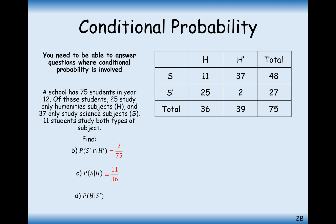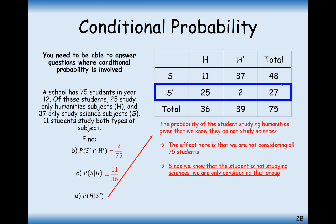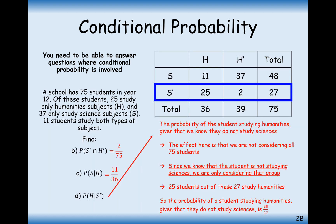Part D: find the probability that someone is a humanities student given that they are not a science student. Read it from the back — they are not a science student, so we're only looking at these 27 students. What's the probability they study humanities? That would be 25, so the answer is 25 out of 27.